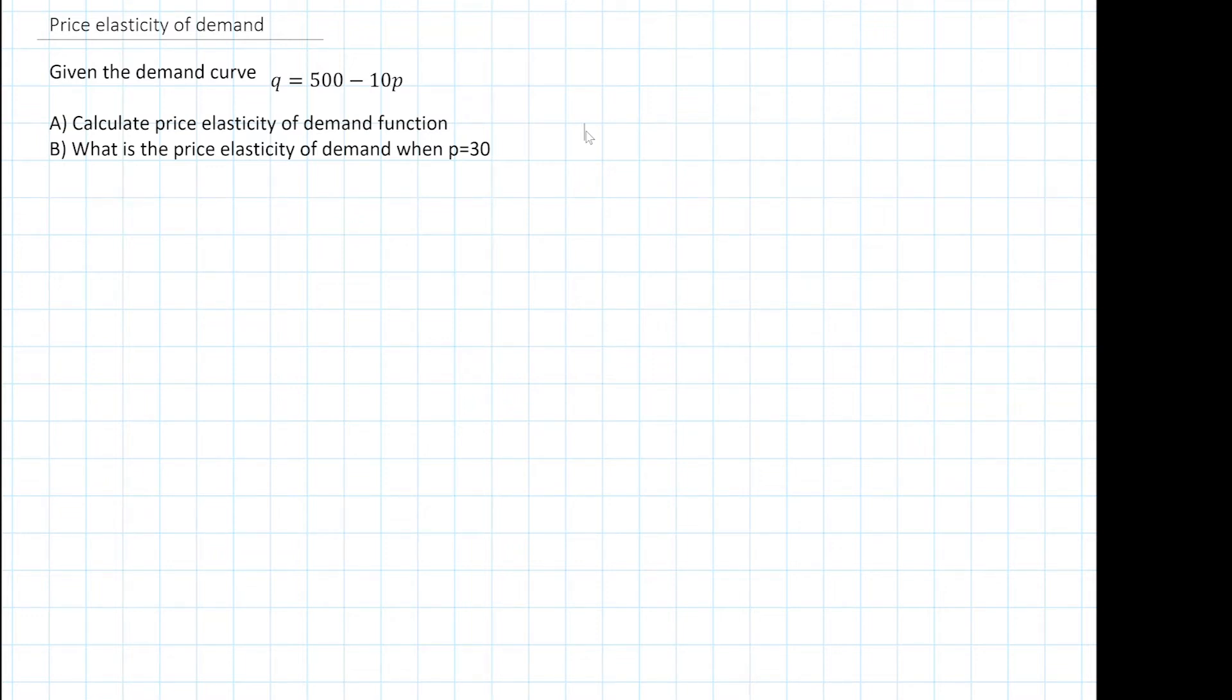Let's start this problem by jotting down the demand curve. So we've got q equals 500 minus 10p.